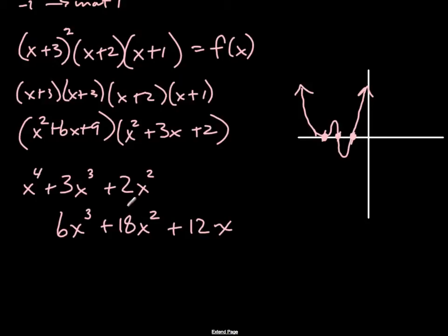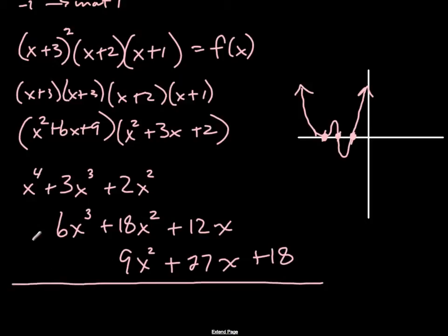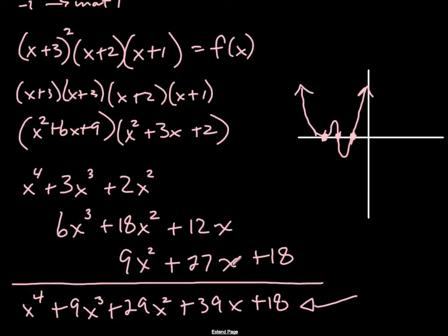And then finally, let's take the 9. 9 times x squared is 9x squared. 9 times 3x would be a plus 27x. And 9 times 2 is plus 18. Okay, once I have all those, then I can add things up. So I have x to the 4th plus 9x cubed plus 29x squared plus 39x plus 18. So there's the polynomial that results from those four factors or those four x-intercepts from above.